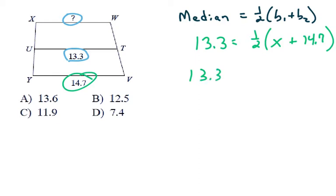Multiplying that out using the distributive property, the 1 half X, plus 1 half times 14.7 is 7.35. Subtract 7.35 from both sides.